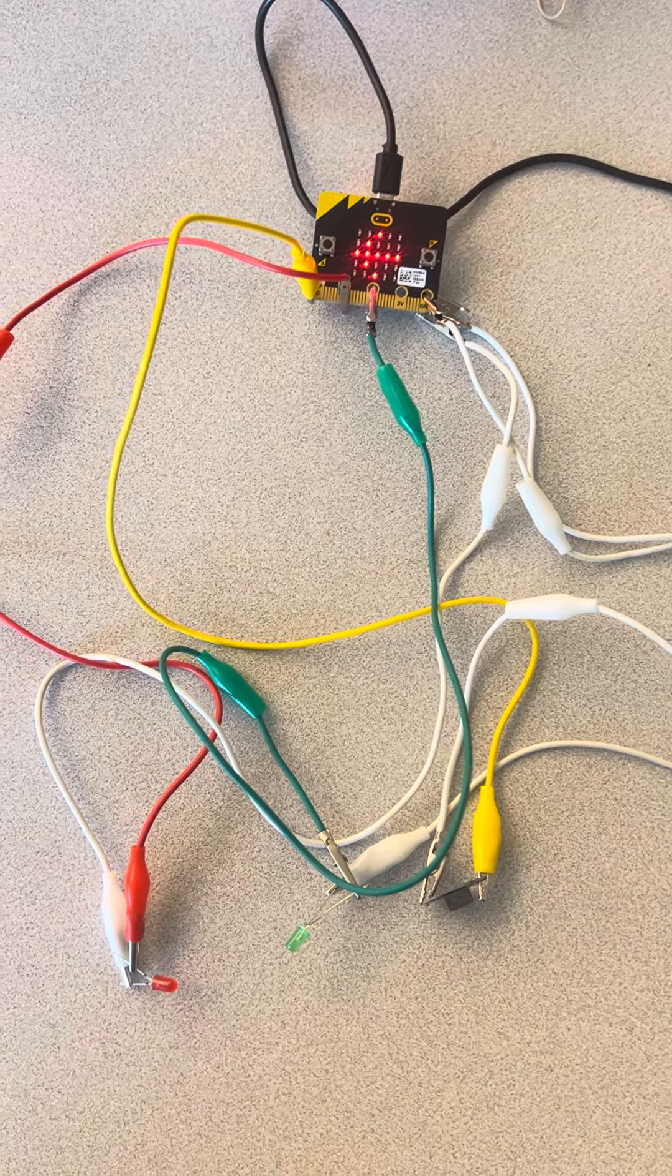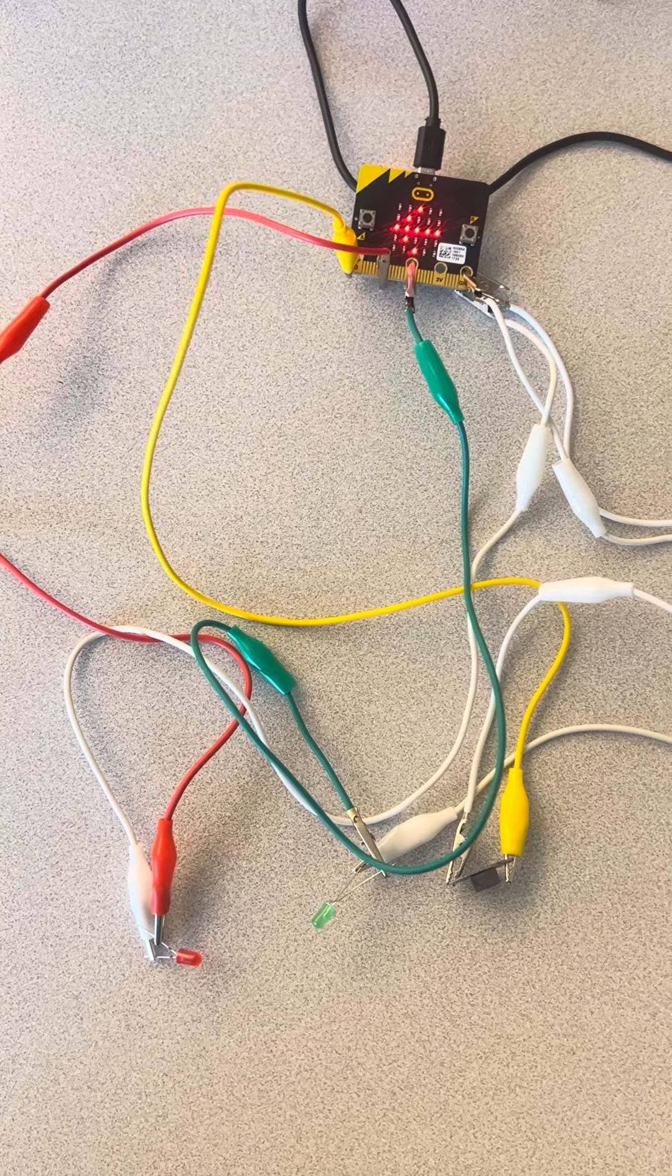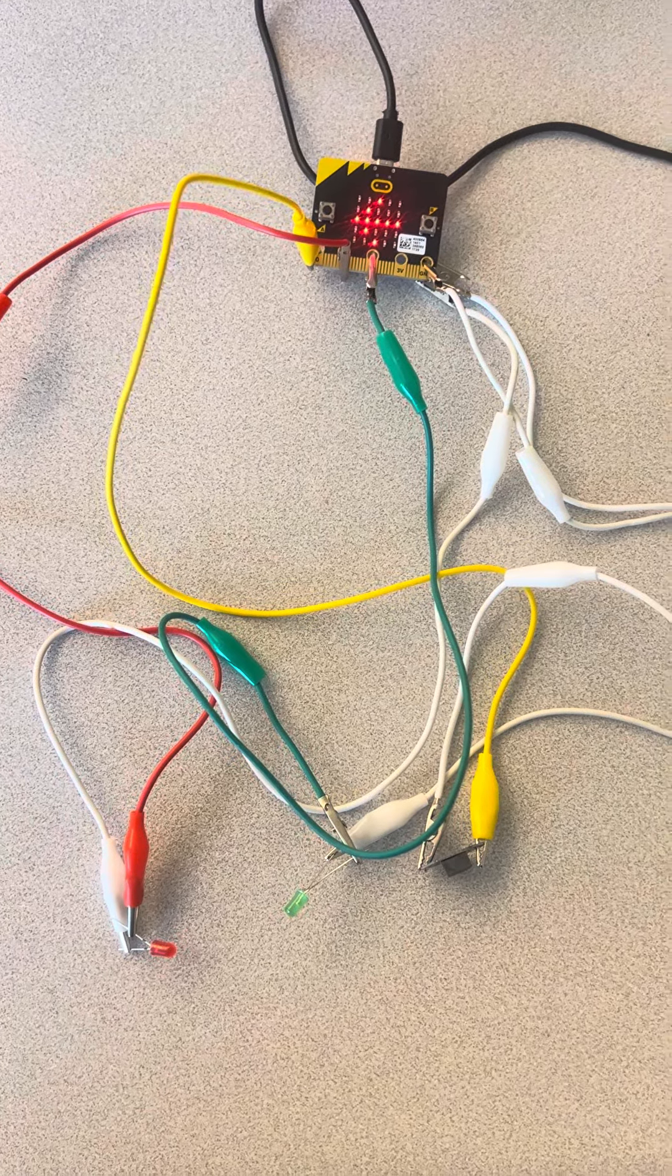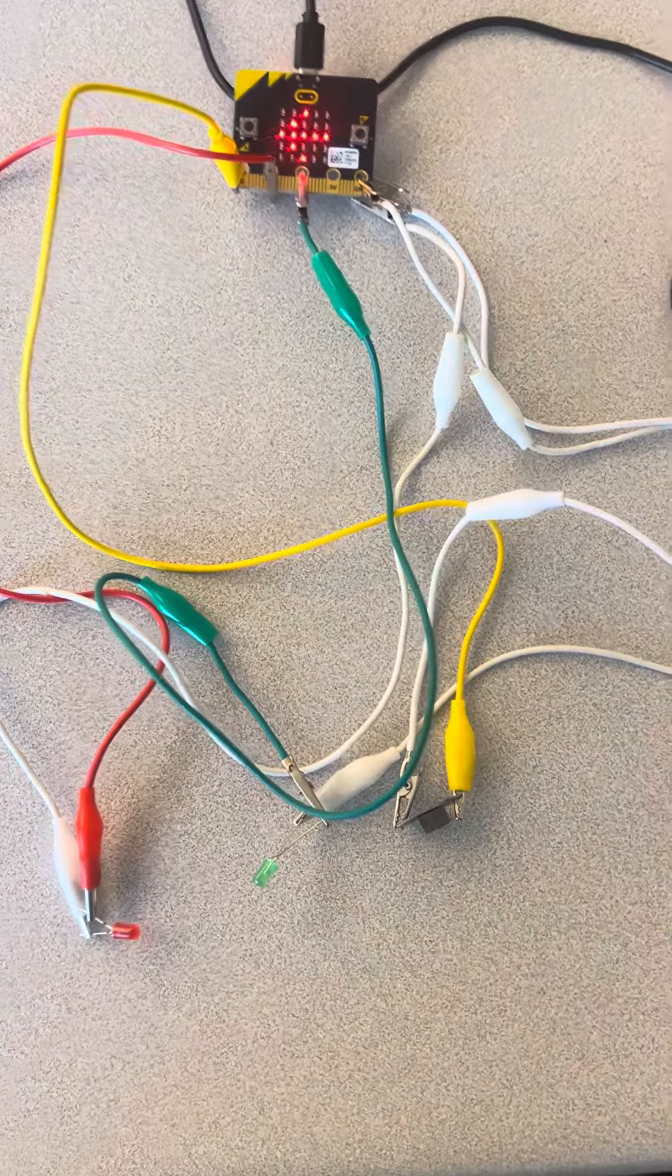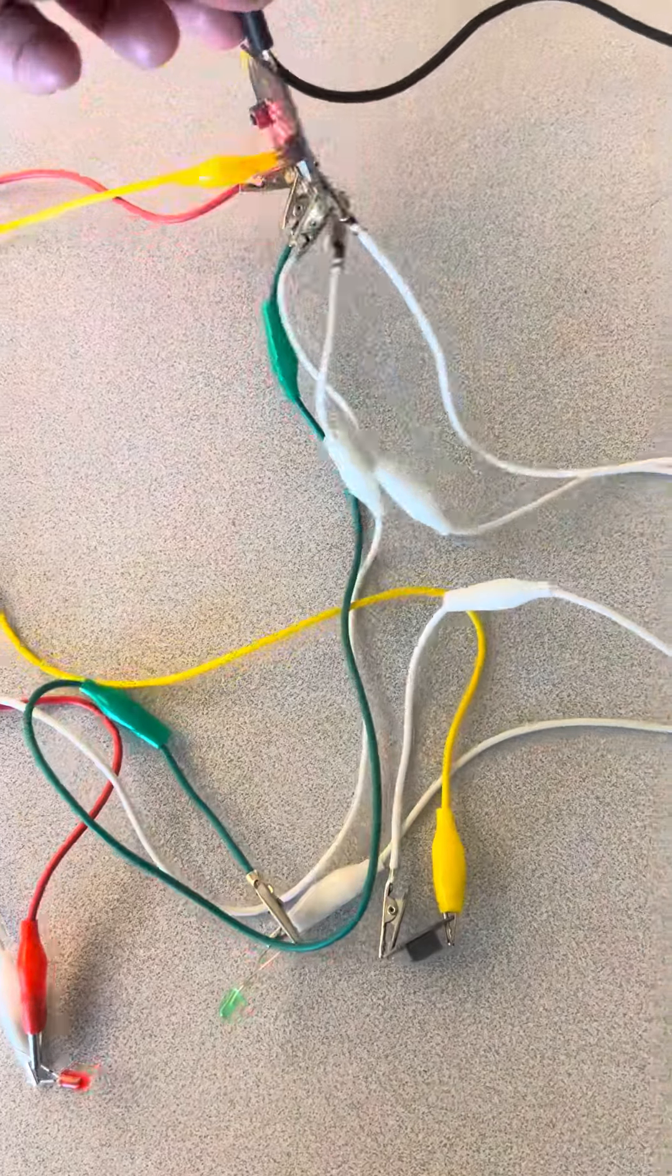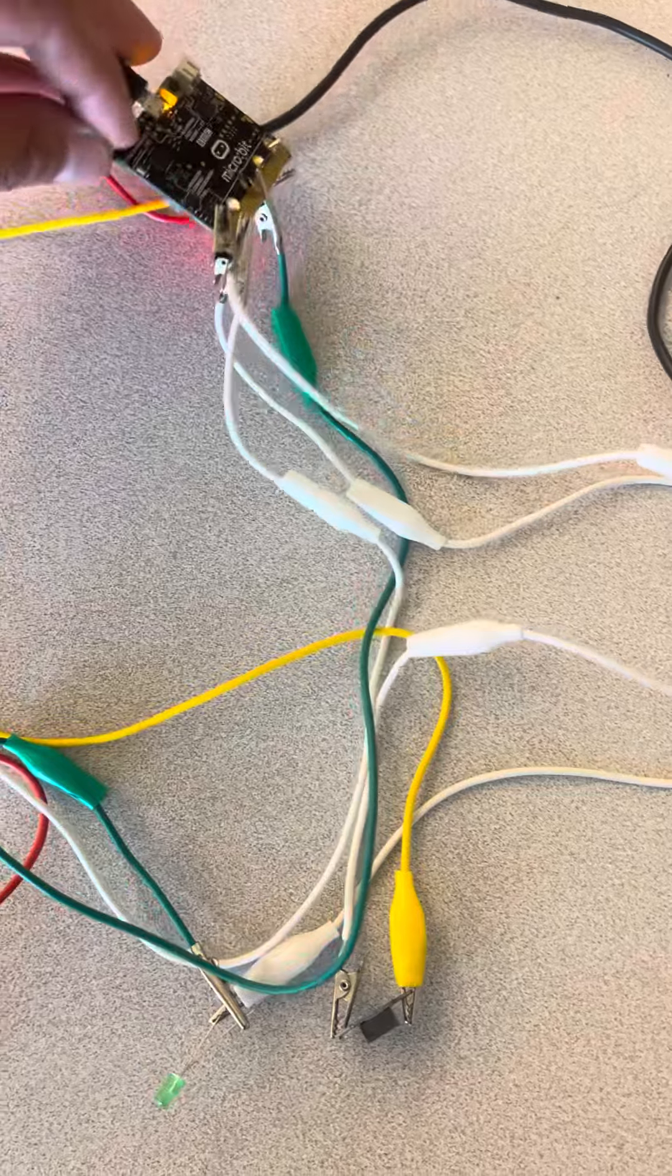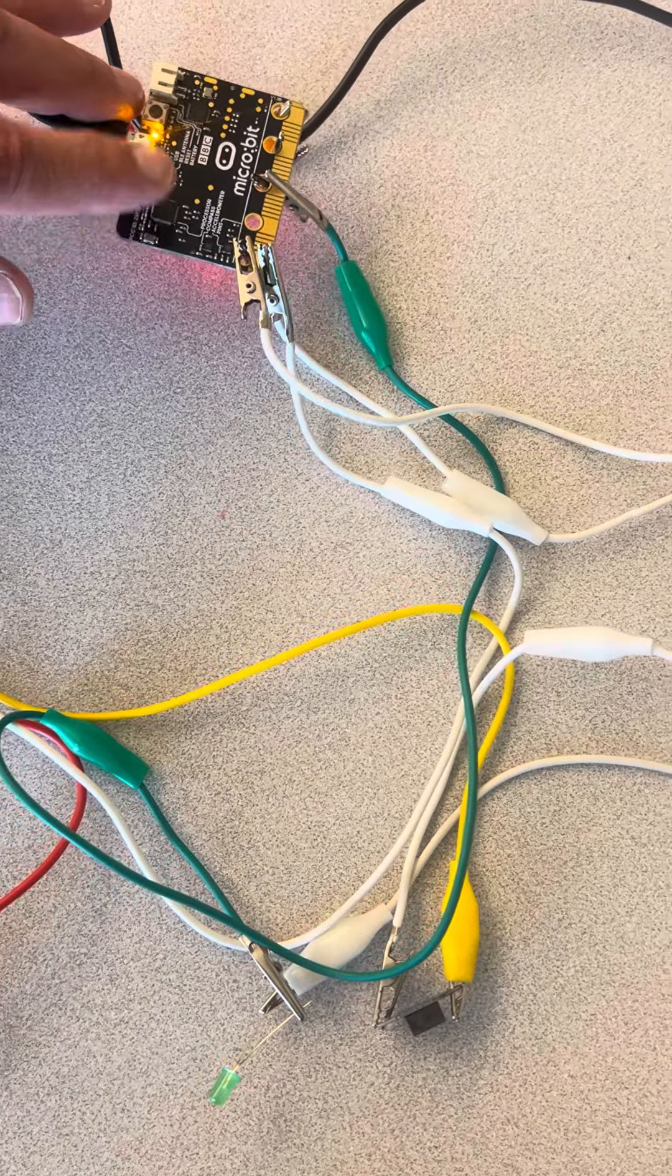Today in this micro:bit example, we made a thermometer. As you can see, the arrow is pointing to the A button, and the temperature is detected here on the back side on the processor, which is right there.